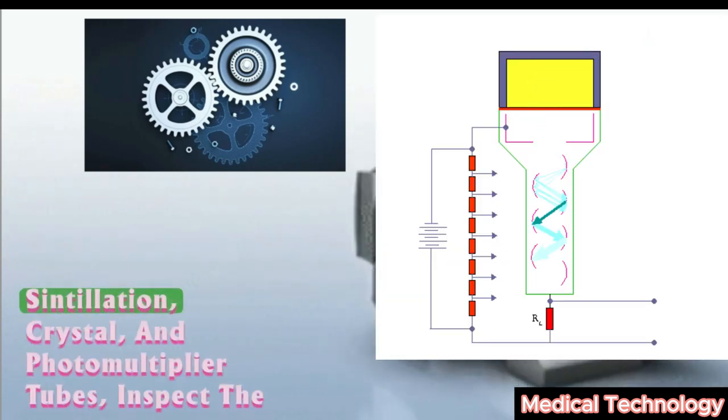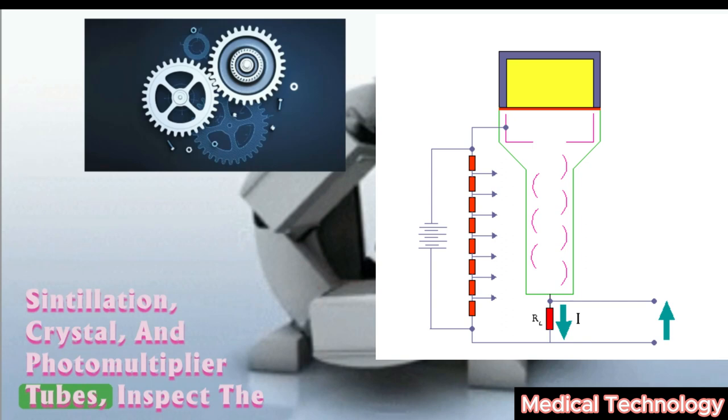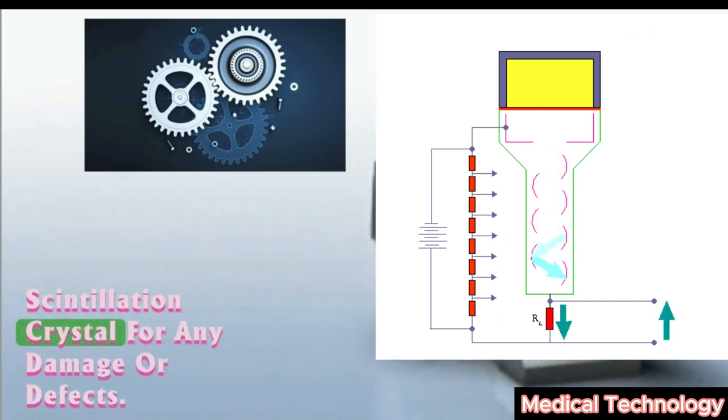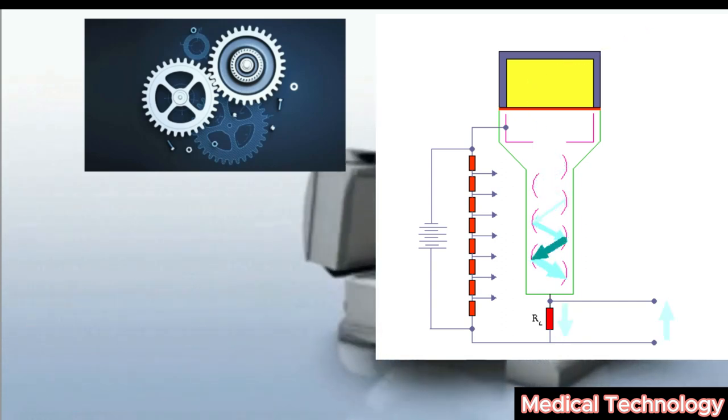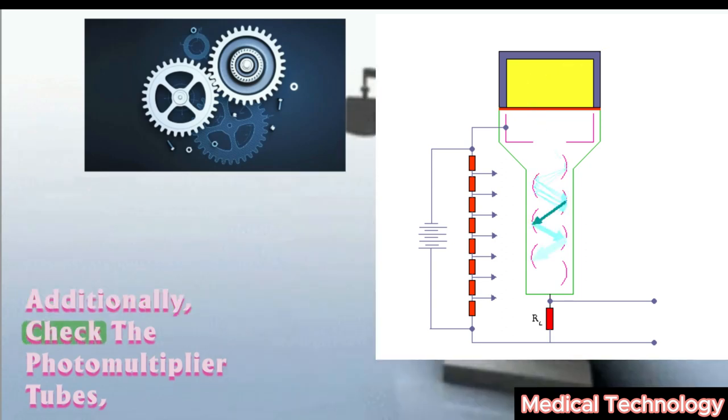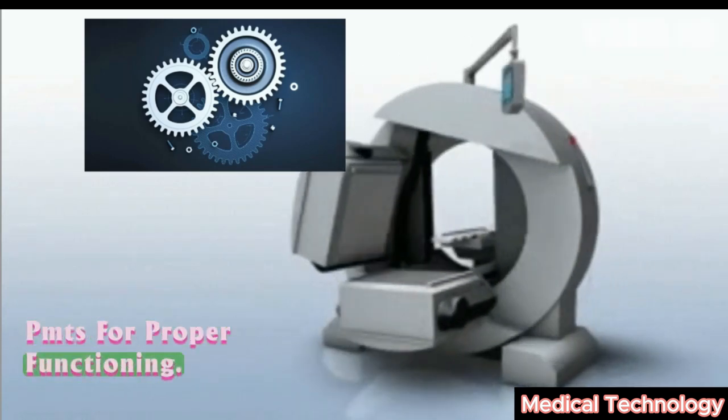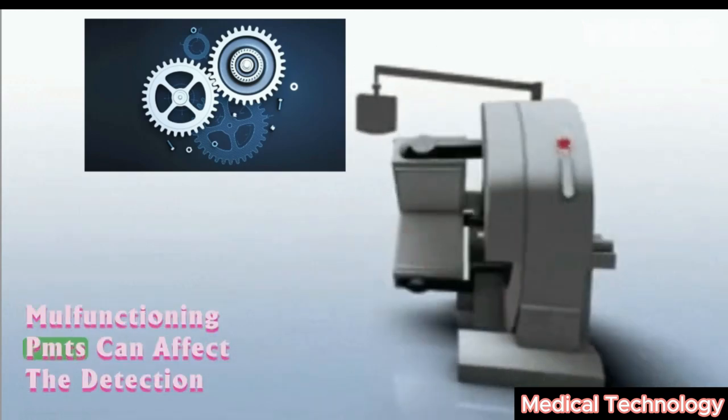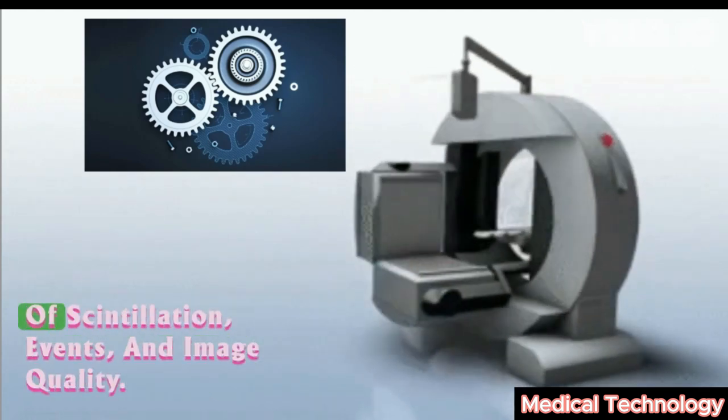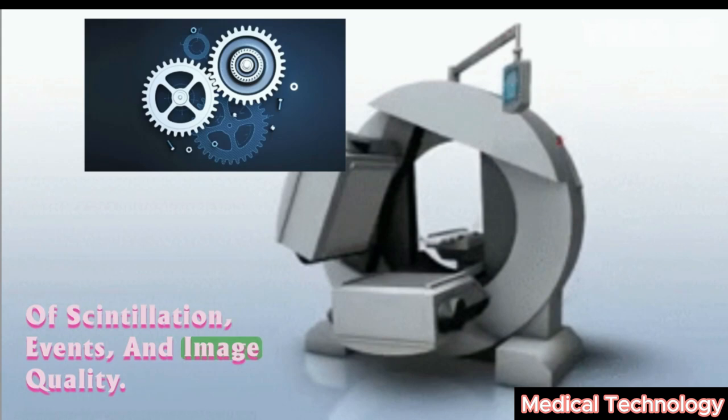Scintillation crystal and photomultiplier tubes: Inspect the scintillation crystal for any damage or defects. Additionally, check the photomultiplier tubes (PMTs) for proper functioning. Malfunctioning PMTs can affect the detection of scintillation events and image quality.